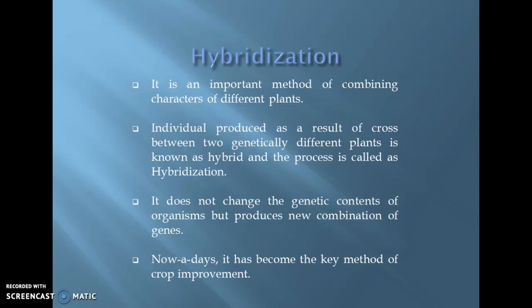It is mainly done by crossing of plants to get useful traits such as resistance to pests and disease, better yield, taste, etc. Nowadays, this hybridization process has become the key method of crop improvement and a vast variety of crop varieties have resulted from it.